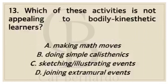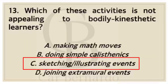Number thirteen: Which of these activities is not appealing to bodily kinesthetic learners? Letter A: Making math moves. Letter B: Doing simple calisthenics. Letter C: Sketching, illustrating events. Letter D: Joining extramural events. Answer: Letter C, Sketching, illustrating events.